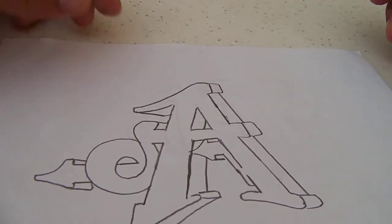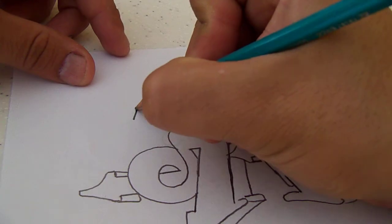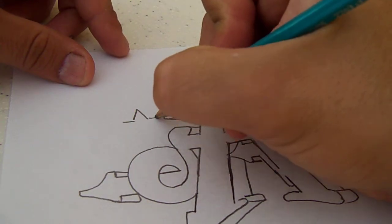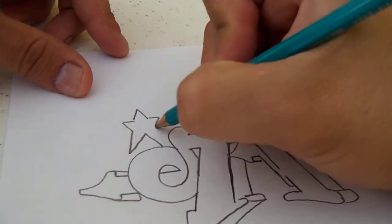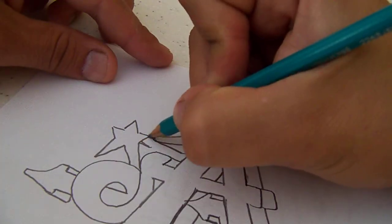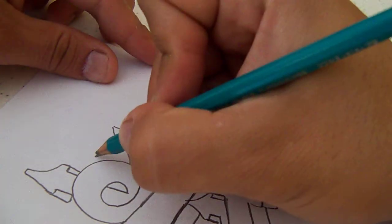Now I have an A. I could add more to this A. If I want I could add a star. Boom. Star.